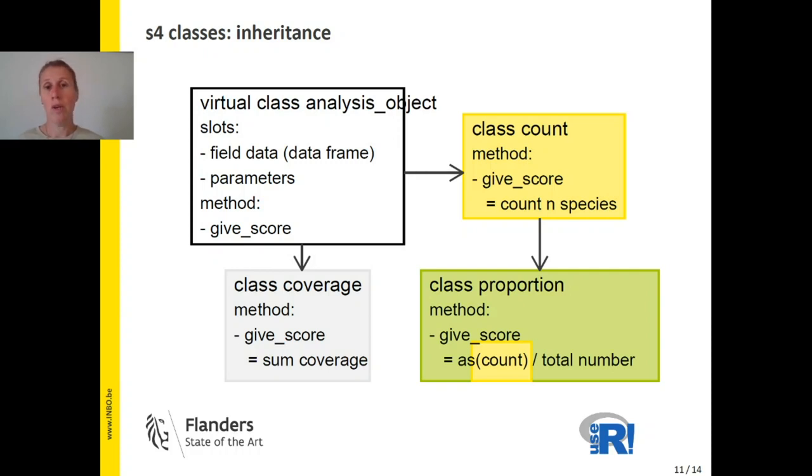So by doing this, we actually force the user to choose between the yellow, the green and the gray class to make an actual object. After he has made an object, he can use methods from the virtual class analysis object.